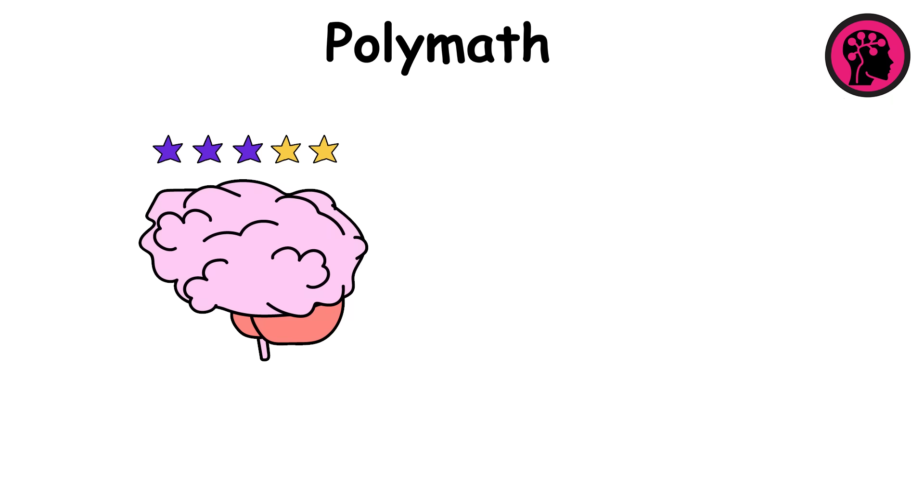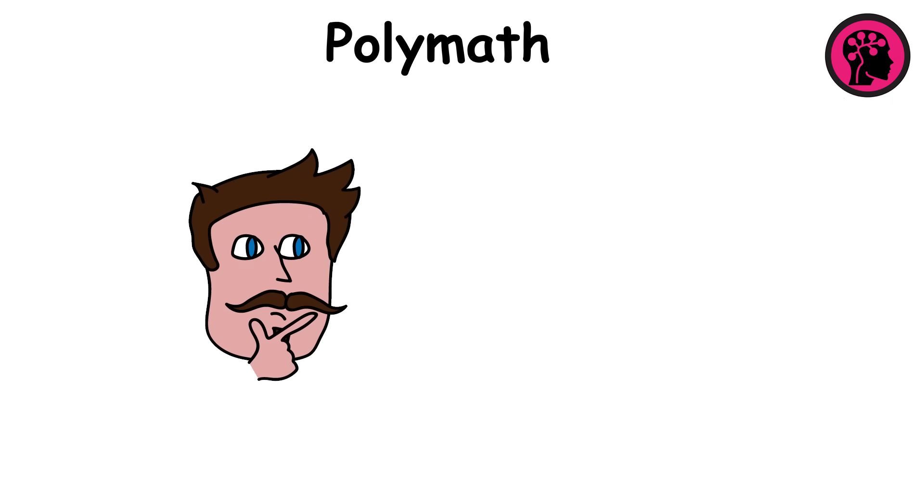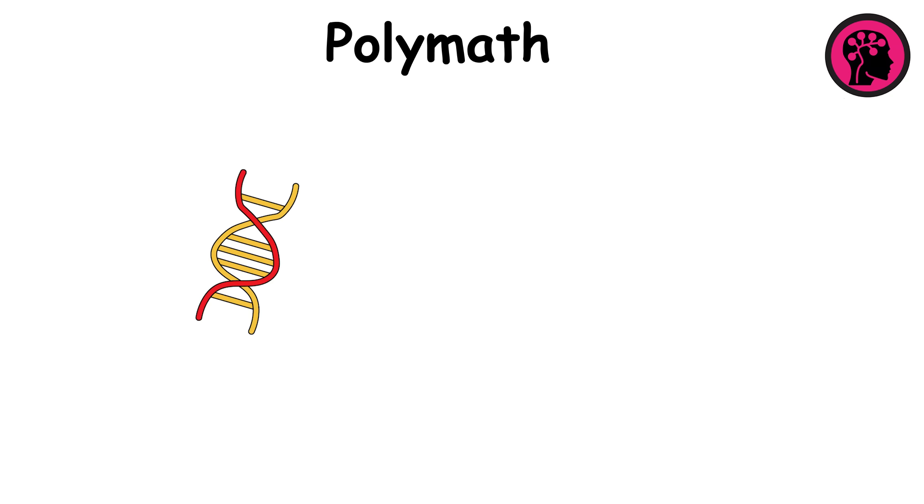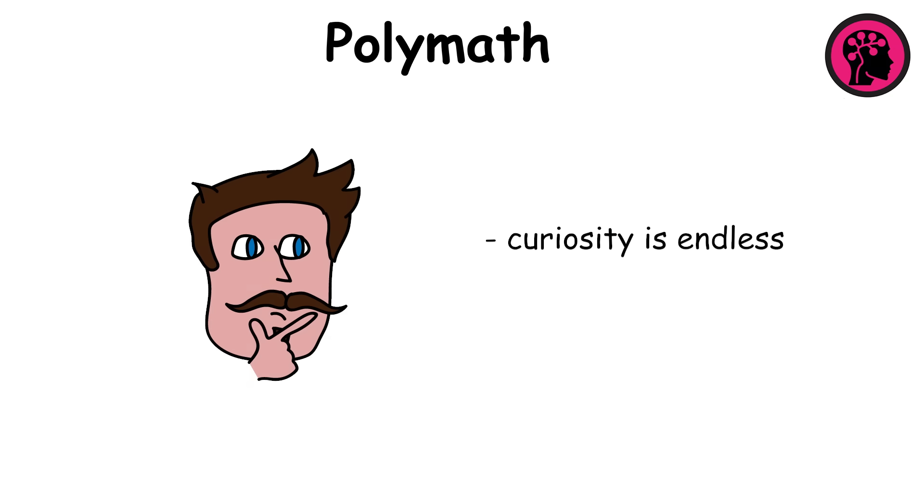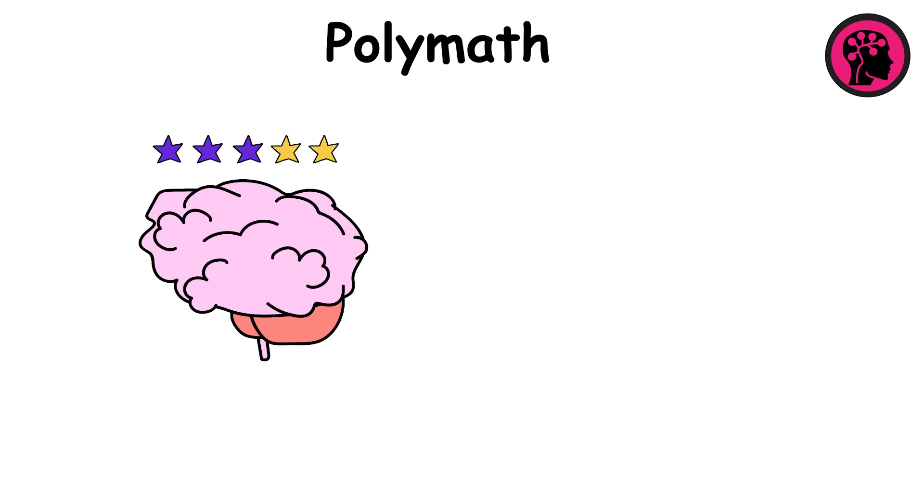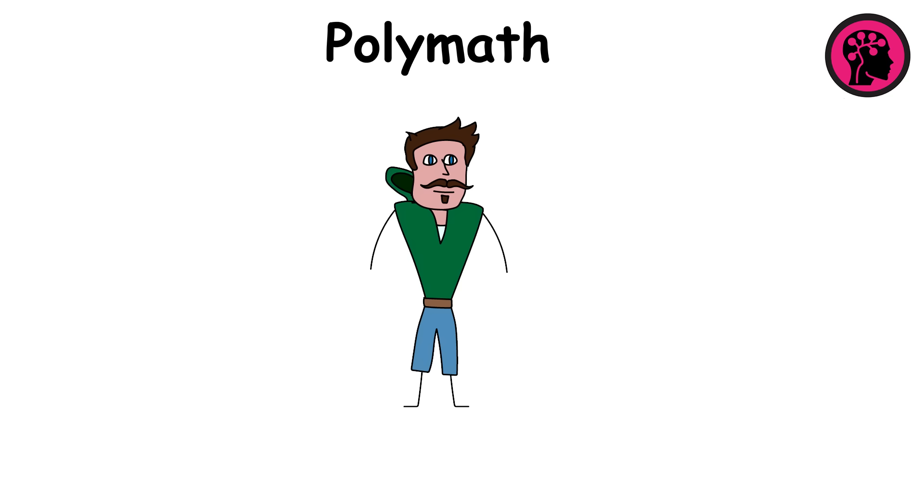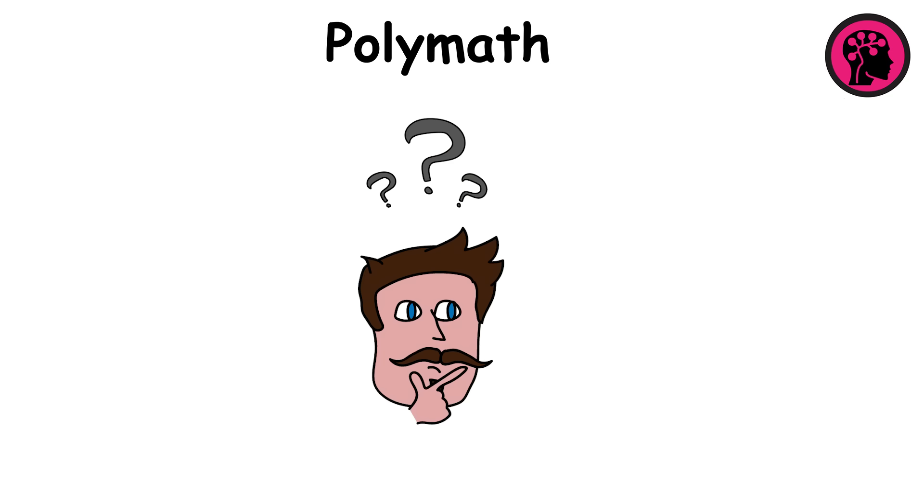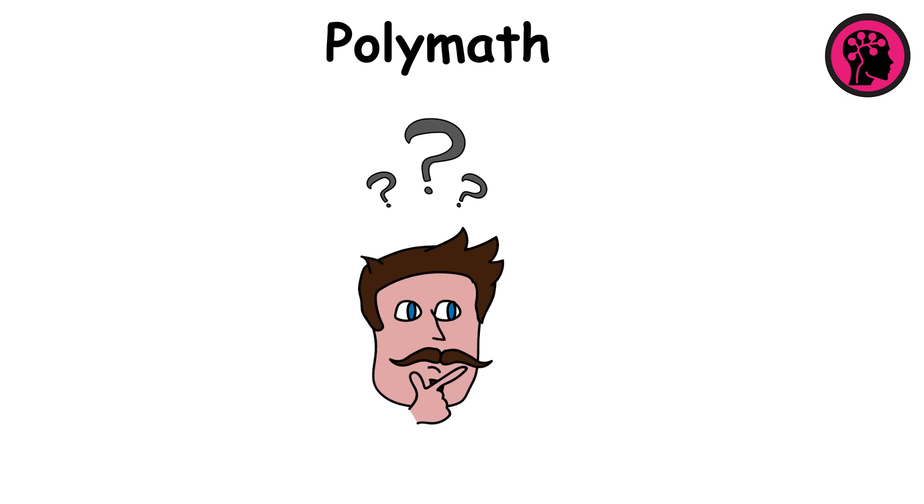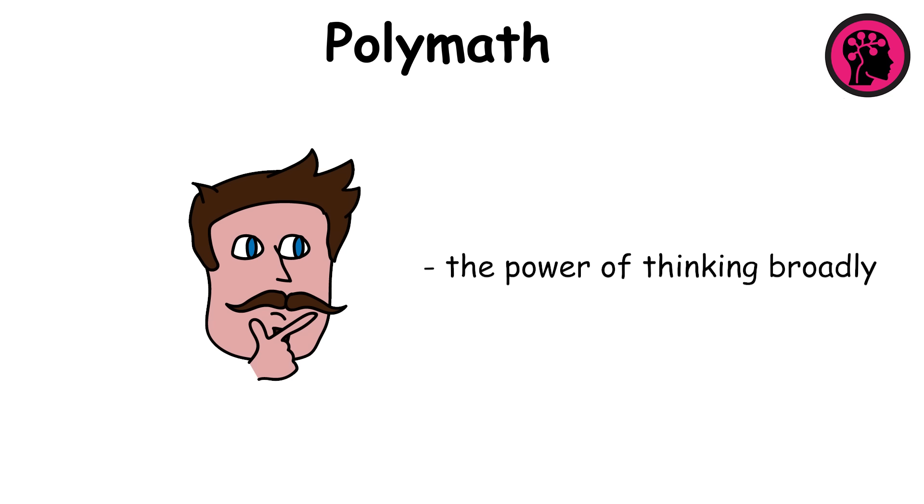What defines this level is a brain that doesn't just absorb knowledge, it synthesizes it across disciplines. Polymaths don't see subjects as separate. They find patterns linking math to music, or biology to philosophy. Their curiosity is endless, and their creativity thrives on variety. Polymath intelligence demands more than raw IQ. It requires time, discipline, and a deep love of learning. These individuals often work across decades, driven by questions no single field can answer. In a world that pushes specialization, polymaths remind us of the power of thinking broadly.